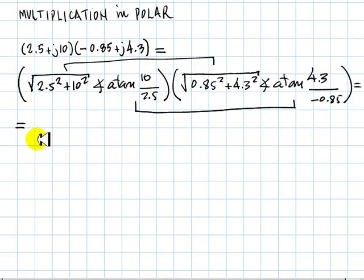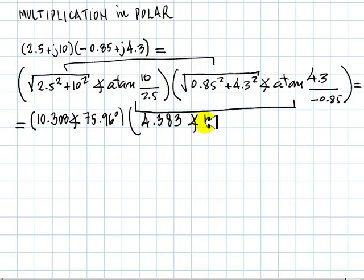Let's write them, find what they are. The first number has a magnitude of 10.308 and an angle of 75.96 degrees. And the second number, this one, has a magnitude of 4.383 with an angle of 101.18 degrees. Now we multiply absolute value with absolute value, and we get 45.18.